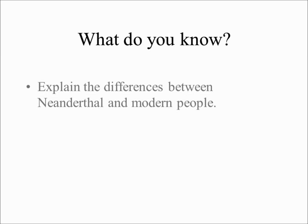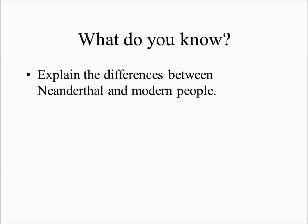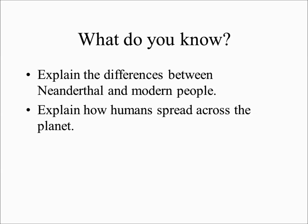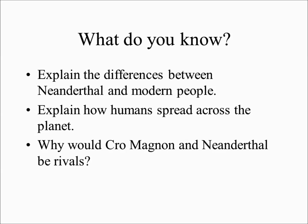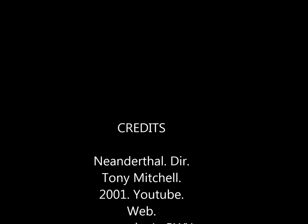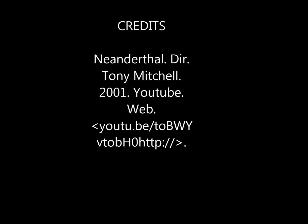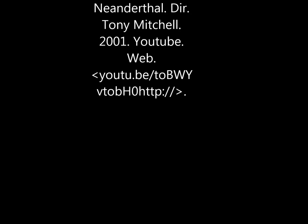Here are the key review questions: What were the differences between Neanderthals and modern peoples in terms of size and brain types? How did humans spread across the planet? What are the two theories, which one is favored by scientists, and which is not? And why would Cro-Magnon and Neanderthals be rivals — what was their competition?